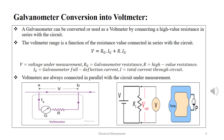A galvanometer can very easily be converted into a voltmeter by connecting a high value resistance in series with the circuit. The voltmeter range is a function of the resistance value connected in series, given as V = RG·IG + R·IG, where RG is the galvanometer resistance, IG is the current flowing through the galvanometer, and R is the high value series resistance. Voltmeters are always connected in parallel with the circuit under measurement.